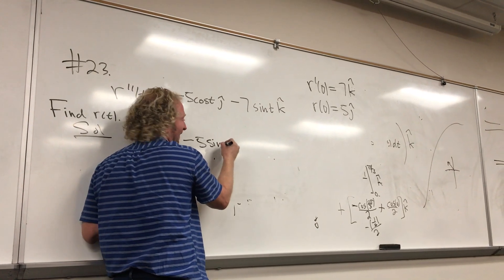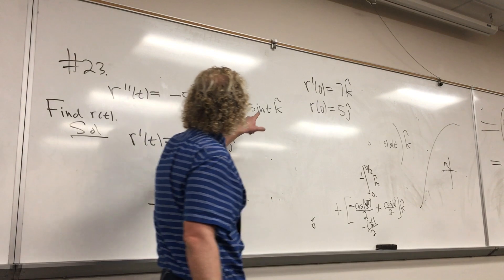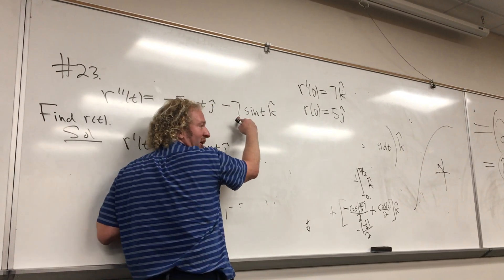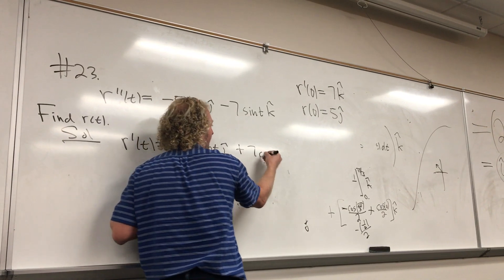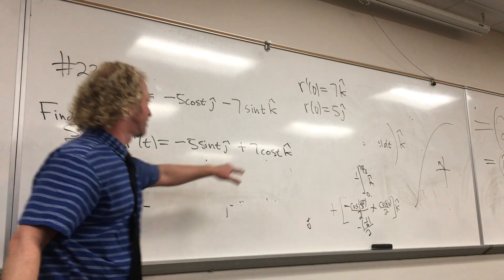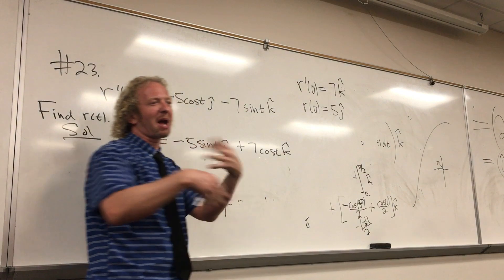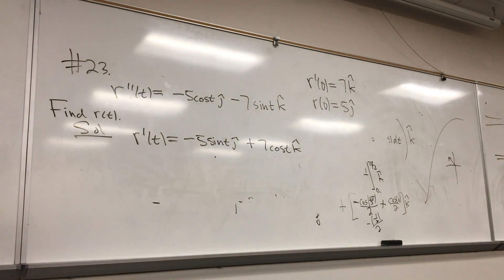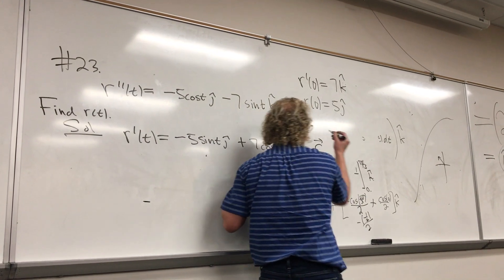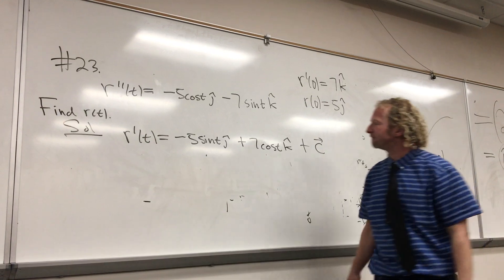Negative 5 sine t, j hat. And then the derivative of cosine is negative sine, so this is going to turn into plus cosine, k hat. Because we're integrating negative sine — the derivative of cosine is negative sine — I'm going backwards. And what's missing? Plus C. And the C is actually a vector. You don't have to write the vector symbol, but it is a vector.